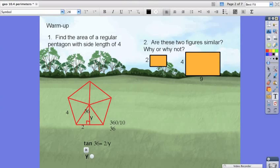Simplifying this further, we are going to get y equals tan 36 divided by 2. And once we plug that into our calculator, we will get... Sorry, I wrote this down wrong.